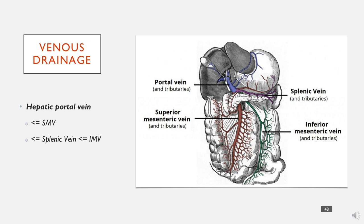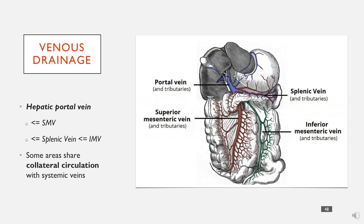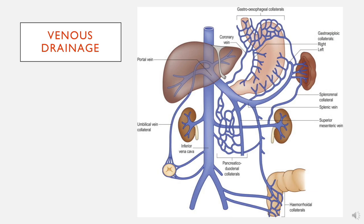There's a lot of anatomical variation about this, so often it may drain into the SMV, or it may drain straight into the portal vein. And some of the areas that are drained by the portal vein — by the splenic, the SMV, and the IMV — will also have circulation with some of the veins, and I'll come on to this.